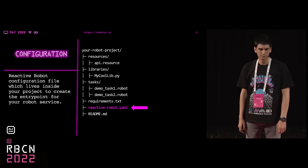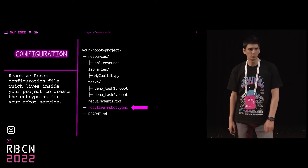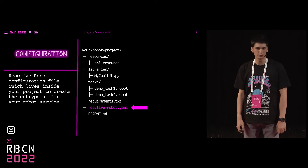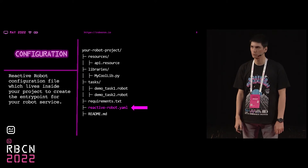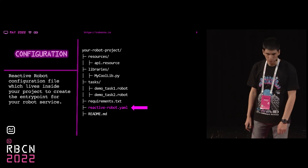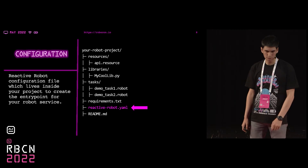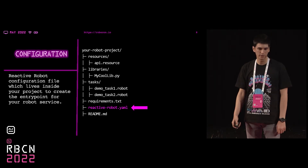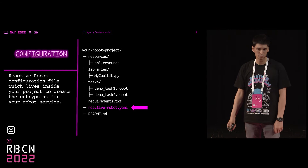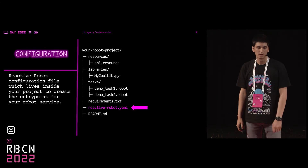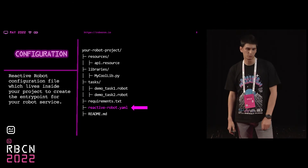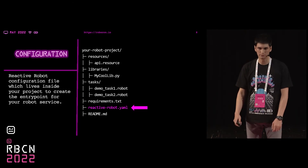The configuration file is a YAML format file which lives inside your project to create the entry point for your robot service. The configuration file can be stored anywhere on your system, as long as you have correct paths for your robot scripts or robot bindings. Conventionally, storing it inside the project would be beneficial — for Dockerizing, for example.